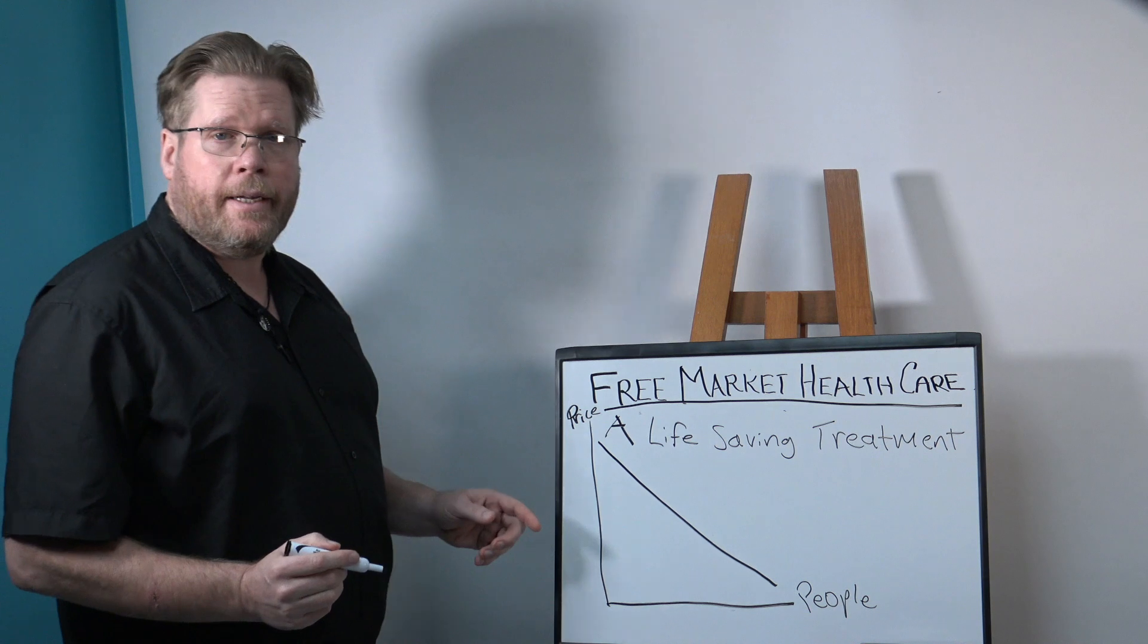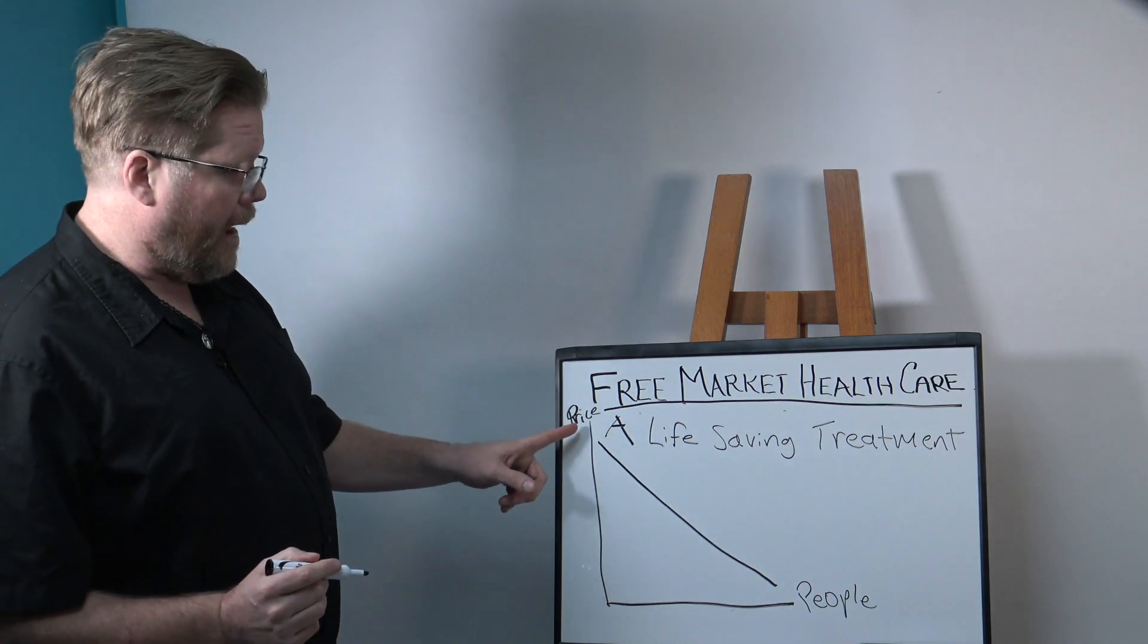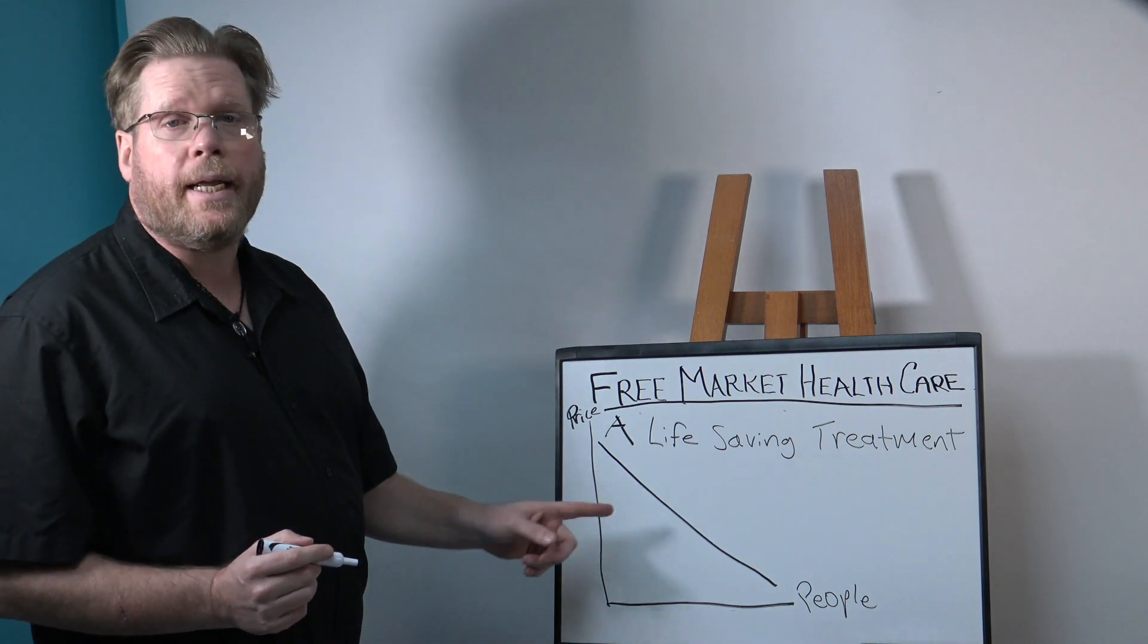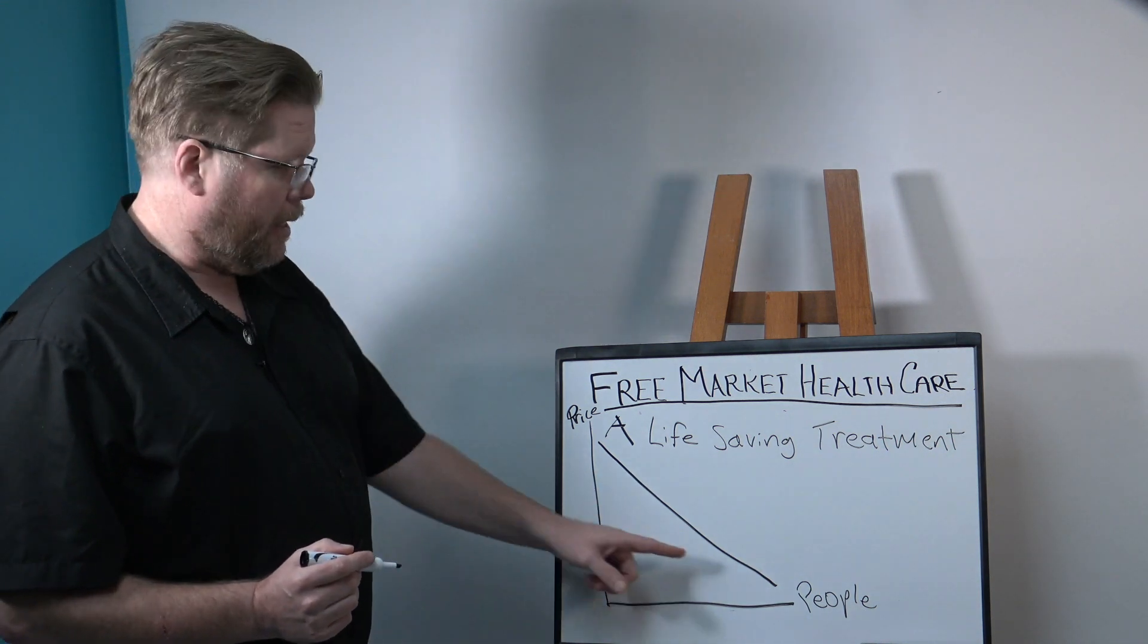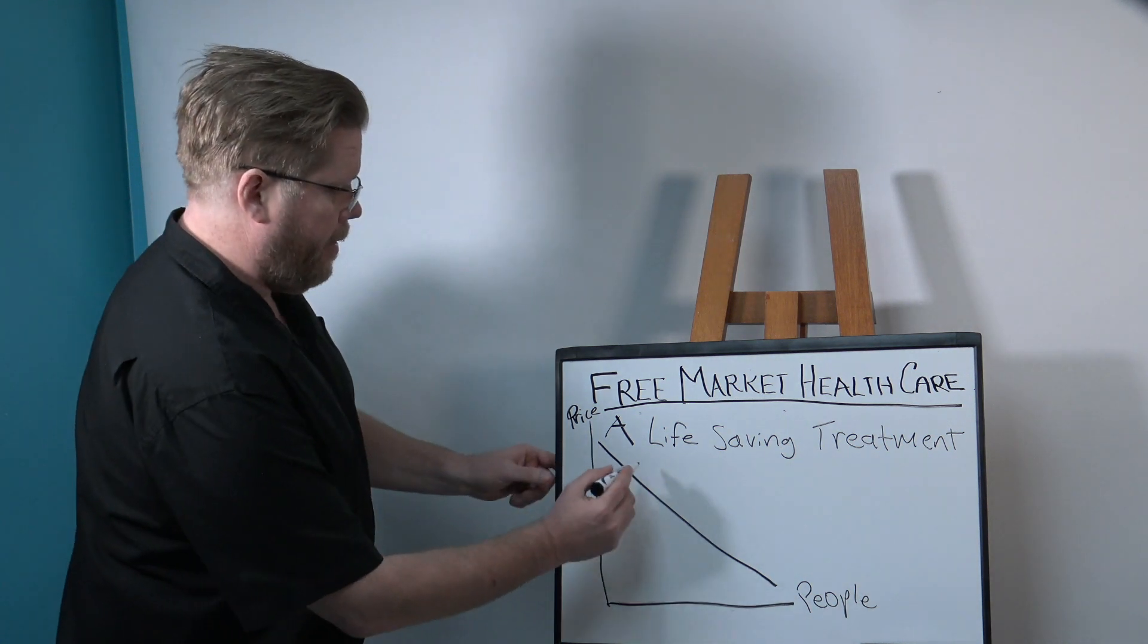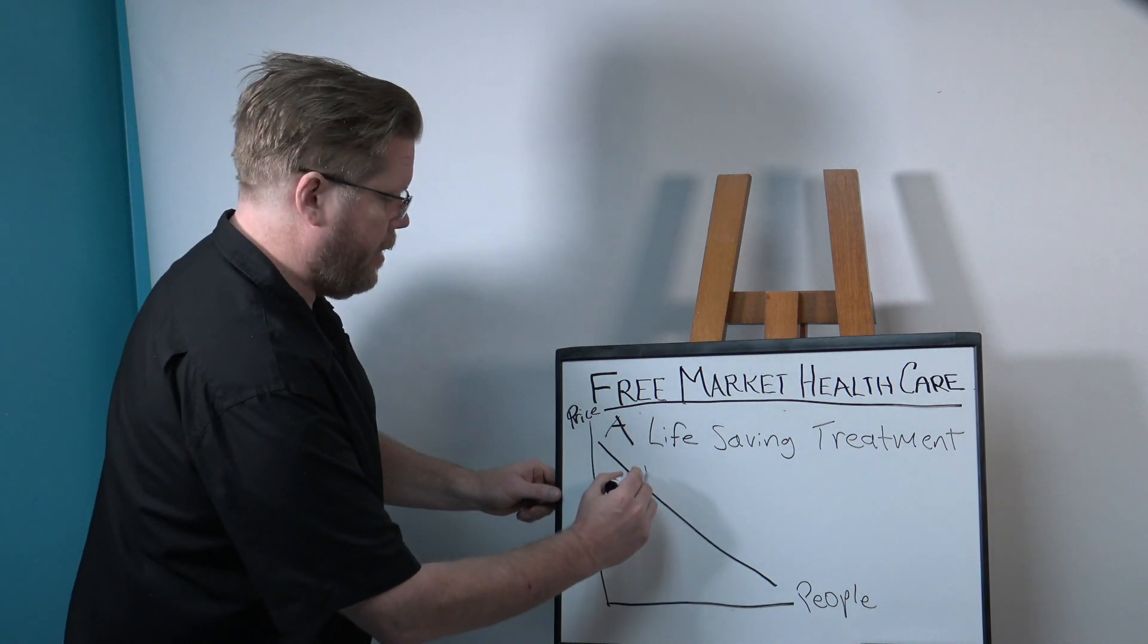Quite simply, the higher the price, the fewer people are willing to pay that price. The lower the price, the more people are willing to pay it. Hence our demand curve.